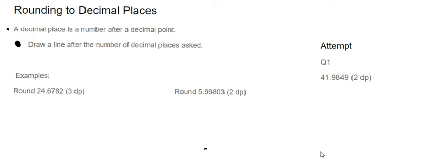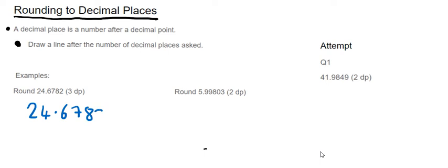A decimal place is a number after a decimal point. We're going to draw a line after the number of decimal places asked and then round from there. Let's have a look at the first example: 24.6782.